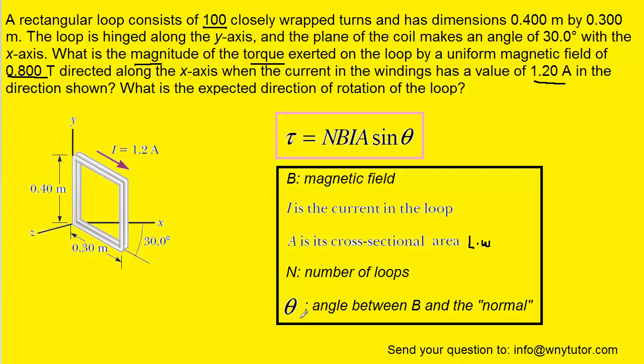And then theta is what really turns out to make this question somewhat challenging. It is the angle between the magnetic field and what is called the normal, and so that warrants a little bit more explanation.